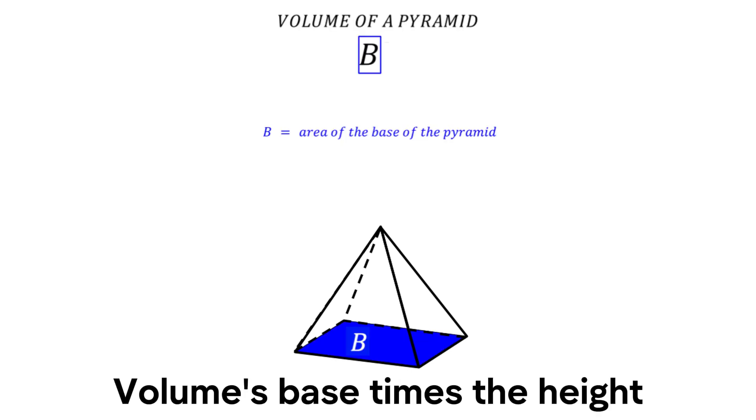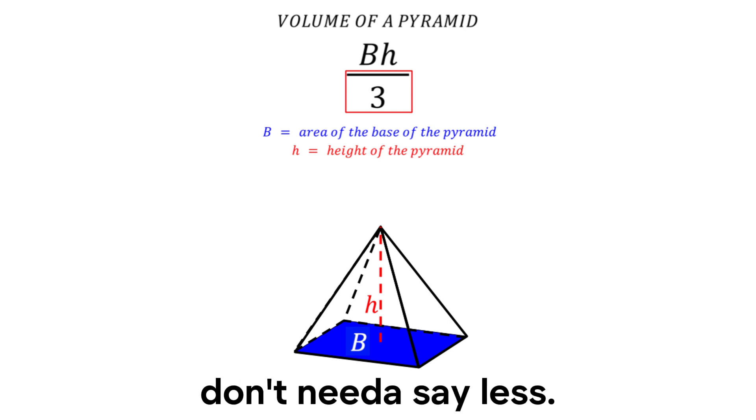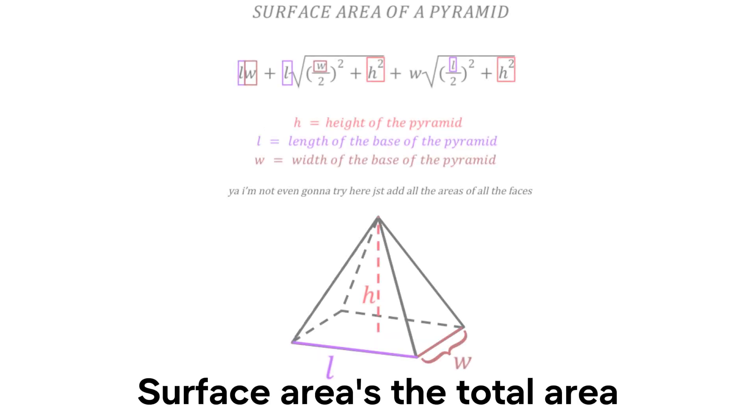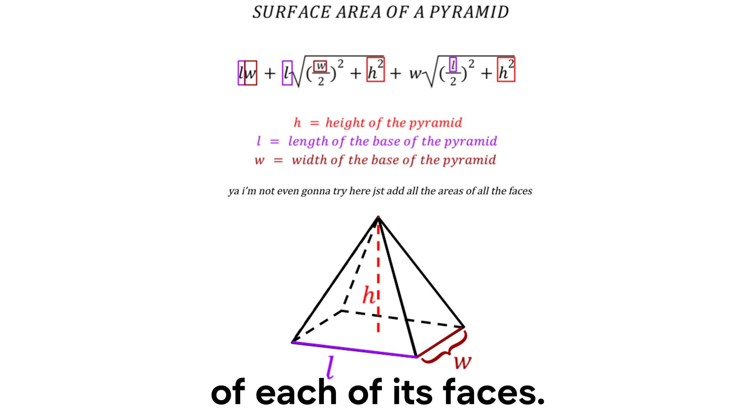Cones, the next volume: base times the height divided by three, don't need to say less. Surface area's the total area of each of its spaces.